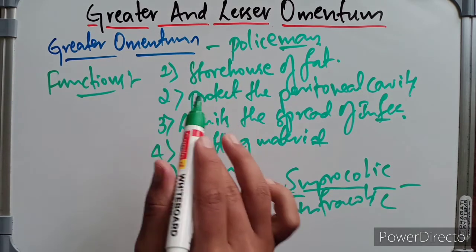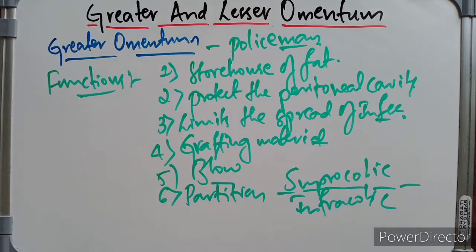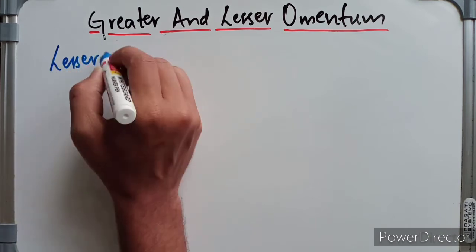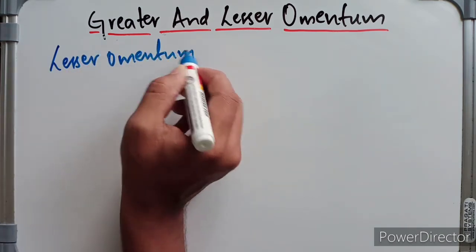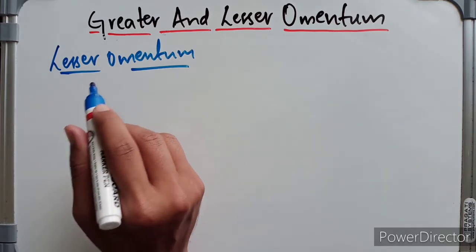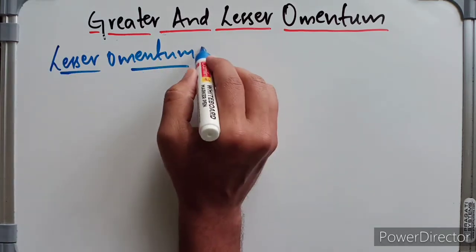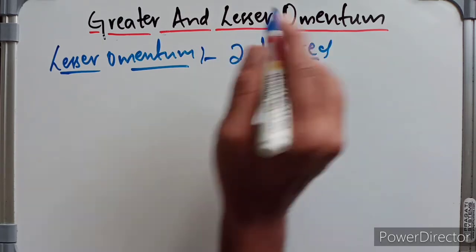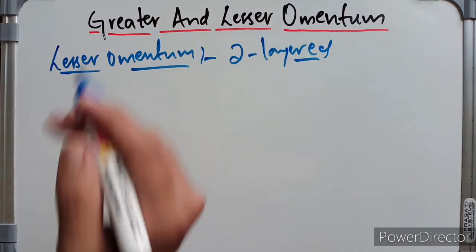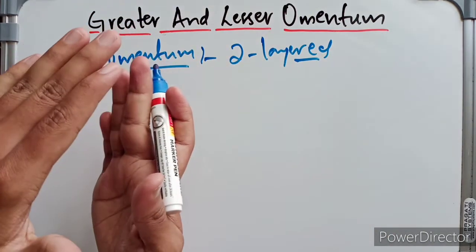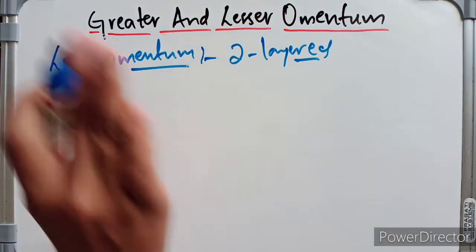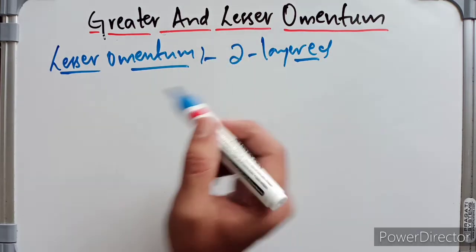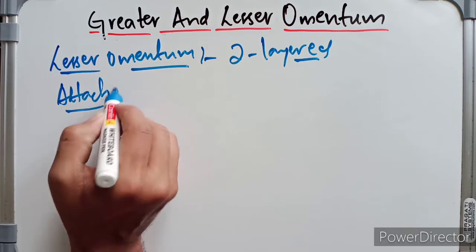Now let's look at the anatomy of the lesser omentum. Unlike the greater omentum which is four-layered, the lesser omentum is a double-layered fold of the peritoneum. It is located between the lesser curvature of the stomach and the inferior surface of the liver.